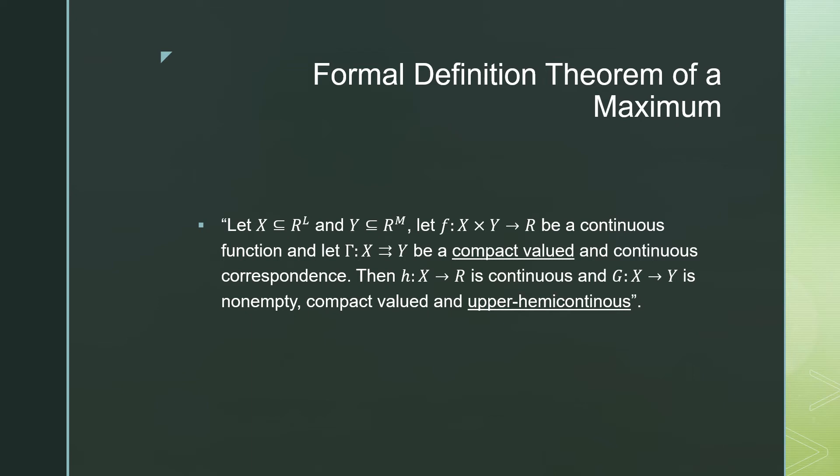Let f: X × Y → ℝ be a continuous function and let Γ: X → Y be a compact valued and continuous correspondence. Then h: X → ℝ is continuous and g: X → Y is non-empty, compact valued and upper hemicontinuous.